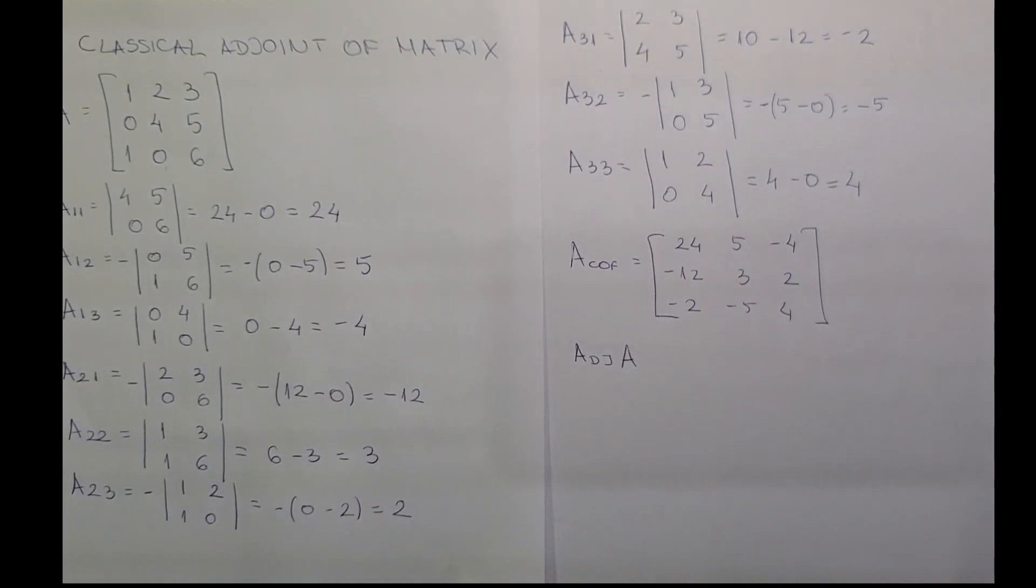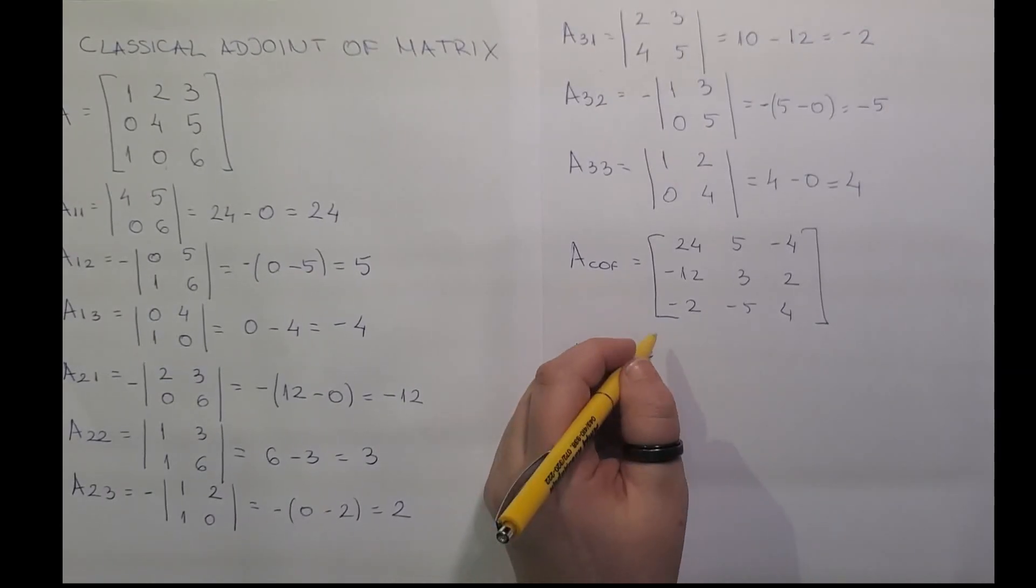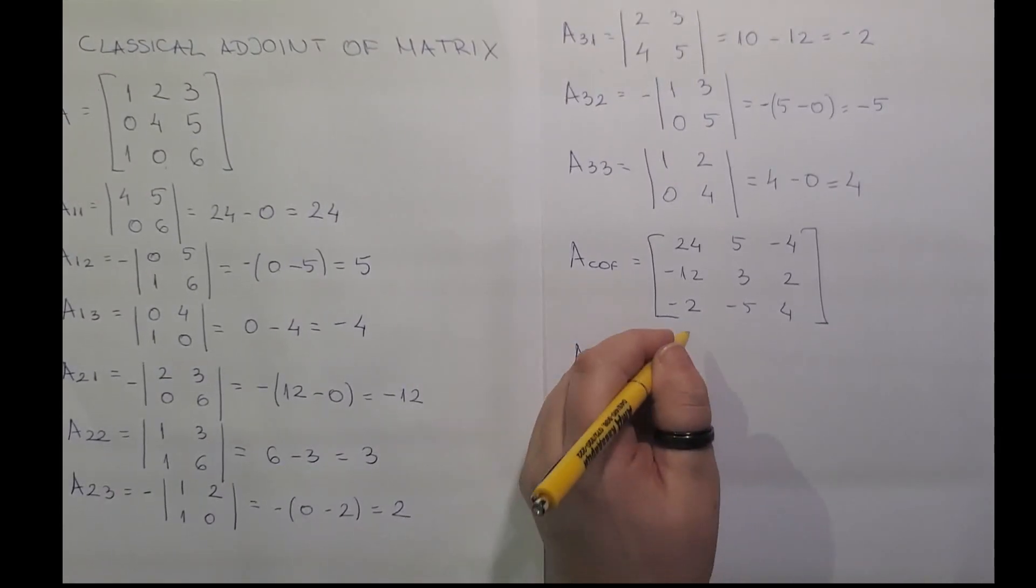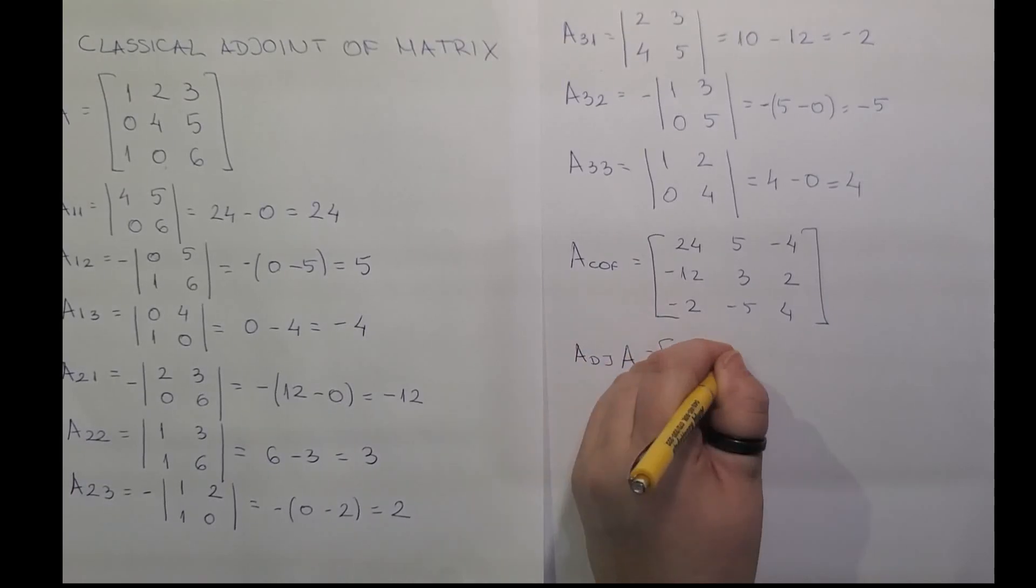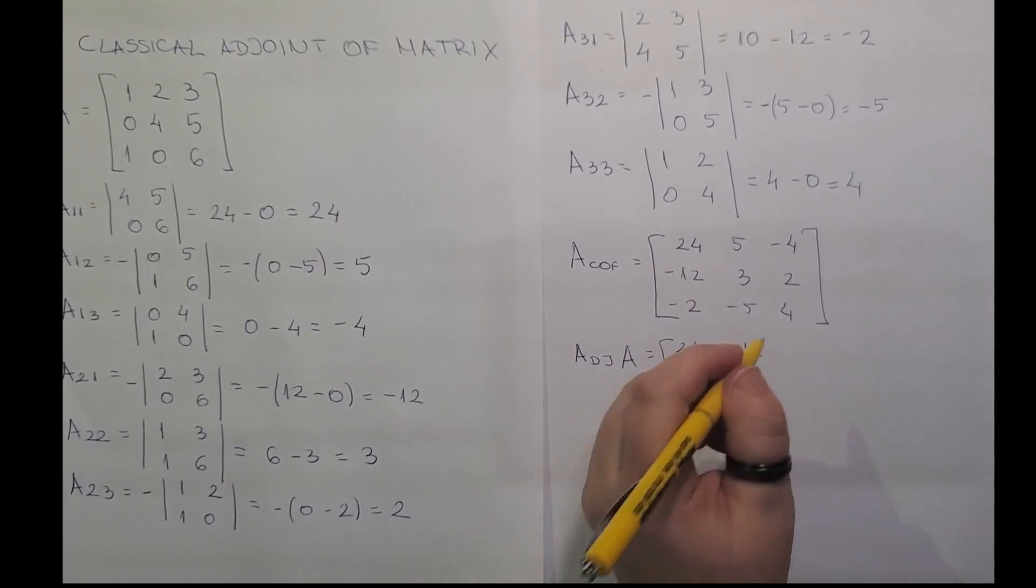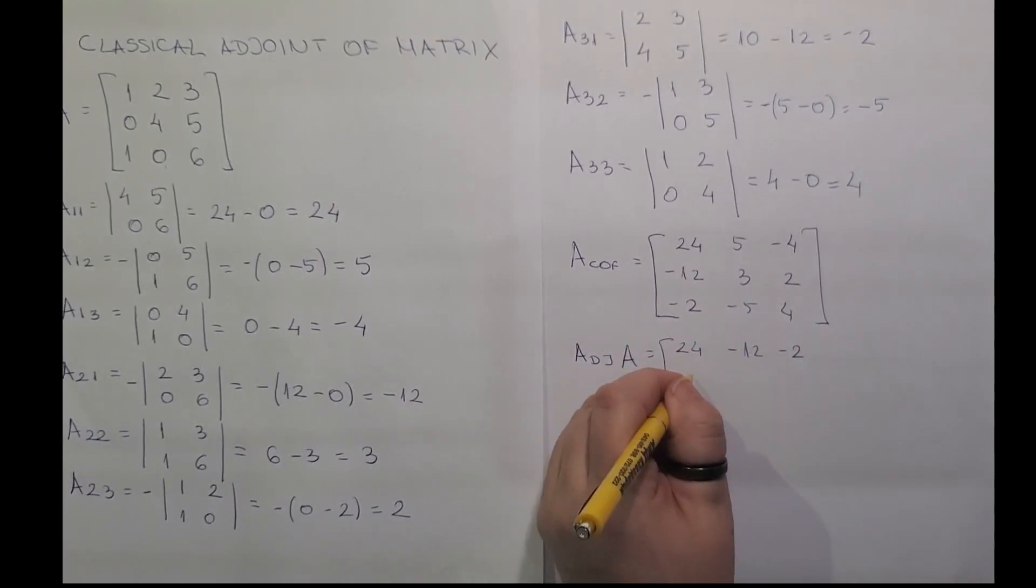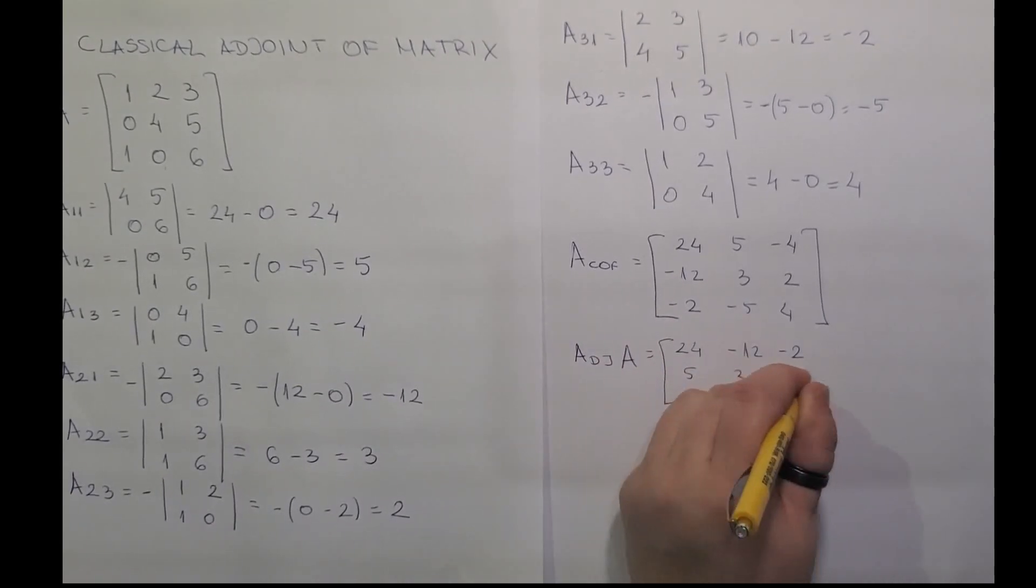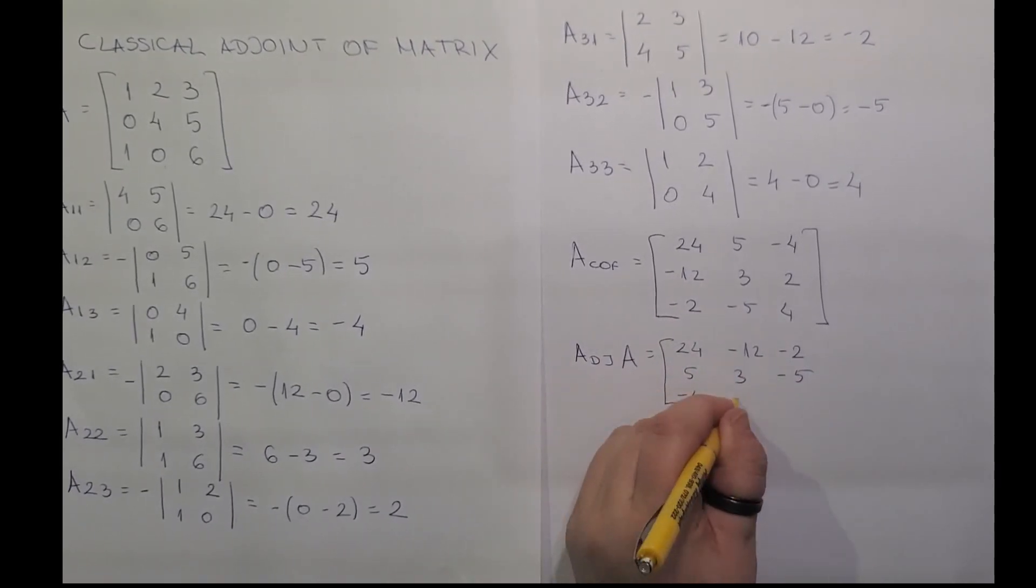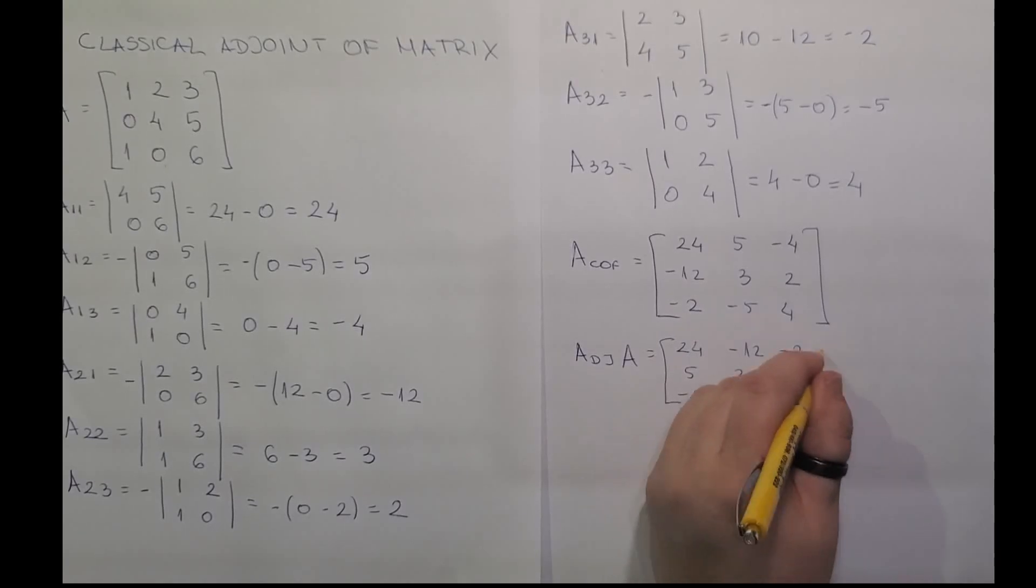A transpose of a matrix is a matrix which is formed by turning all the rows of a given matrix into columns or vice versa. So here we have 24, minus 12, minus 2, 5, 3, minus 5, minus 4, 2, and 4.